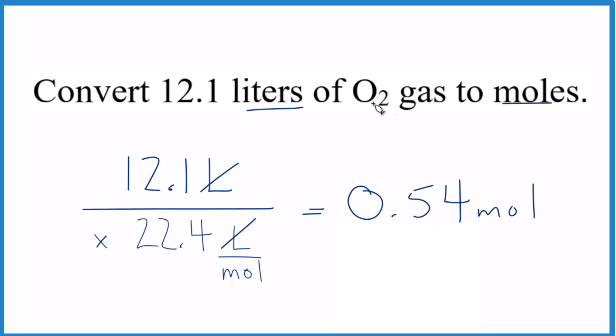We should note that O2 is a fairly ideal gas, close to an ideal gas, and that we're at STP, standard temperature and pressure. So we don't really need to worry about the temperature and the pressure in our calculation here.